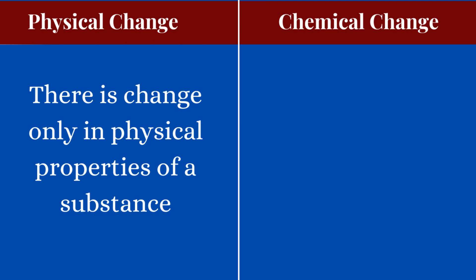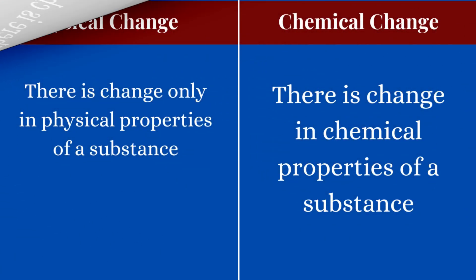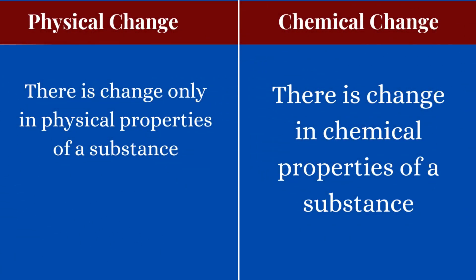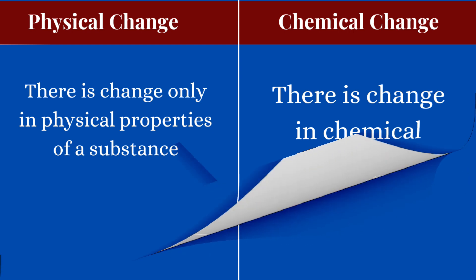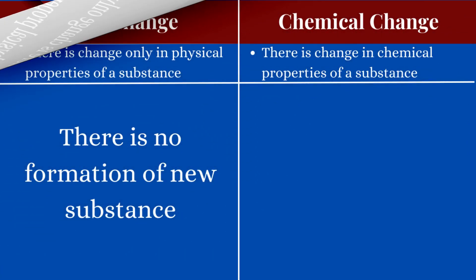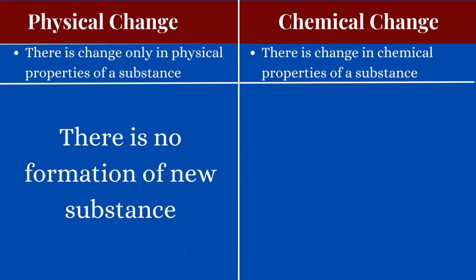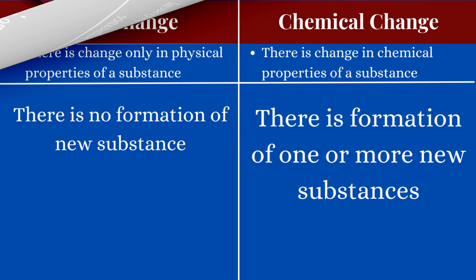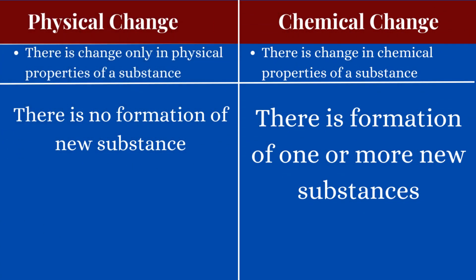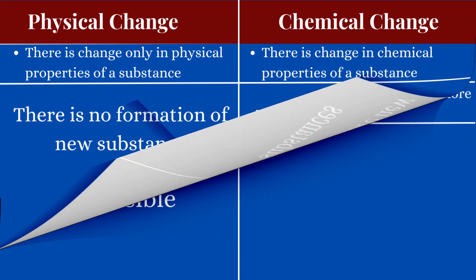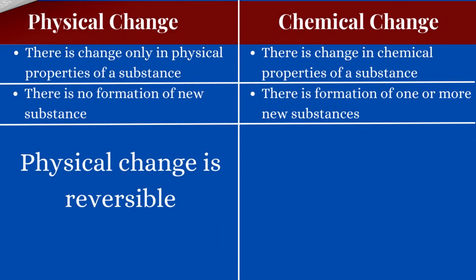As the name suggests, in physical change there is change only in the physical properties of the substance, while in chemical change there is change in the chemical properties of the substance. In physical change there is no formation of new substance, while in chemical change there is a formation of one or more new substances.